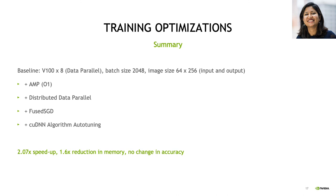To summarize, for my application, over the baseline of training with data parallel on eight GPUs, adding AMP, replacing data parallel with distributed data parallel, using the FusedSGD optimizer, and using optimized CUDNN convolutional algorithms via auto-tuning — all of these optimizations were very helpful. With all of them enabled, I reduced training time by nearly 2x, reduced memory used during training by 1.6x, and there was virtually no change in performance or accuracy. I was very impressed by the efficiency gains achieved and would encourage you to apply these tricks in your own code to use GPU time more efficiently.